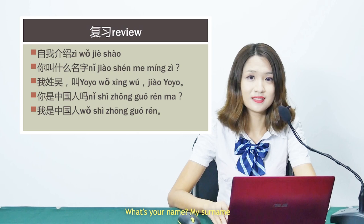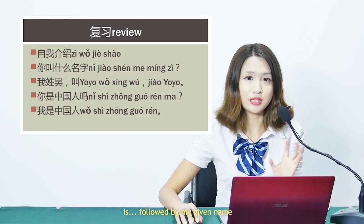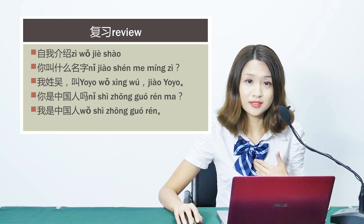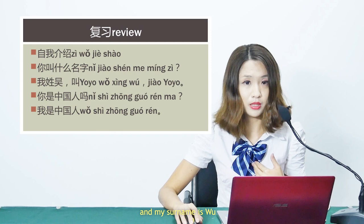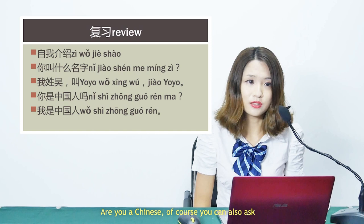你叫什么名字? — What's your name? So first, my surname is, followed by my given name. 我姓吴，叫Yoyo. So my first name is Yoyo and my surname is Wu.